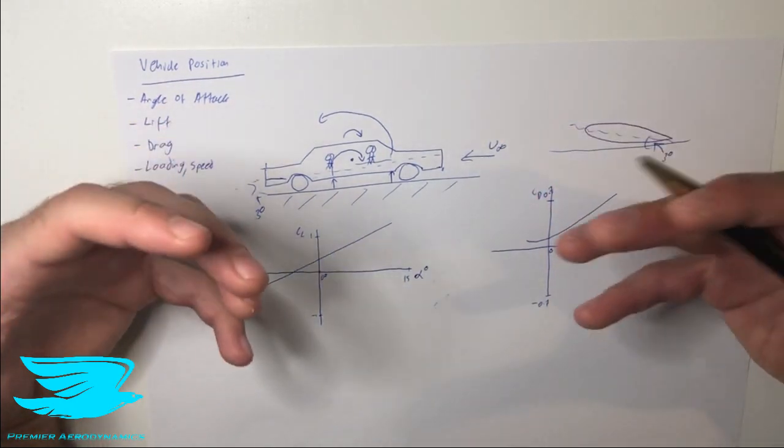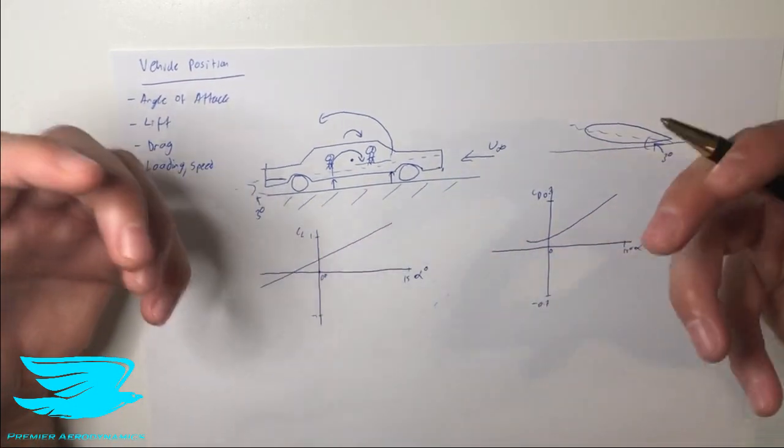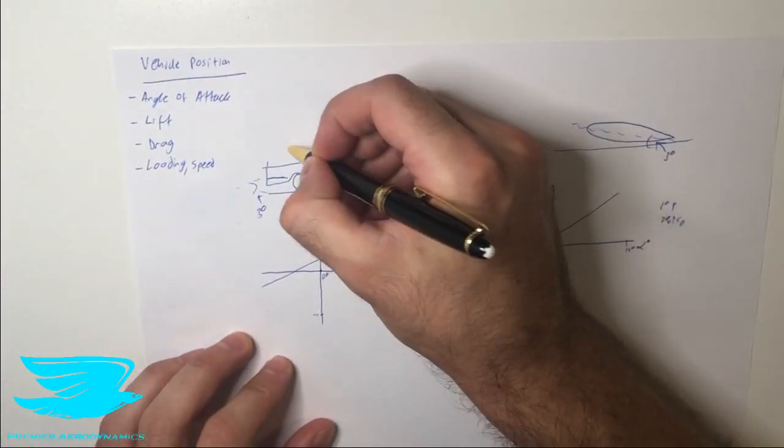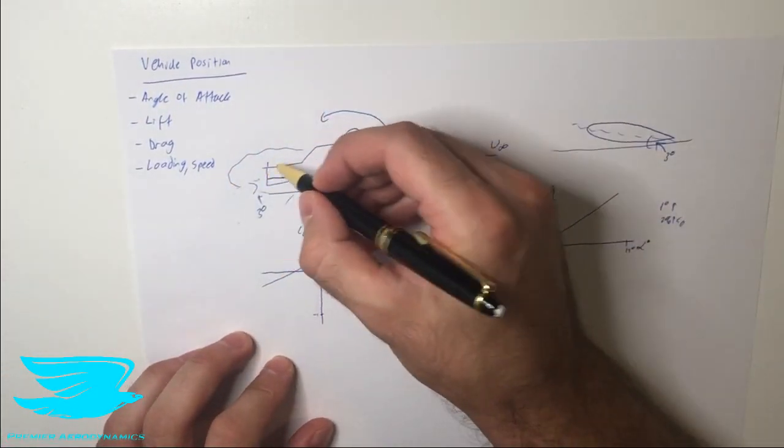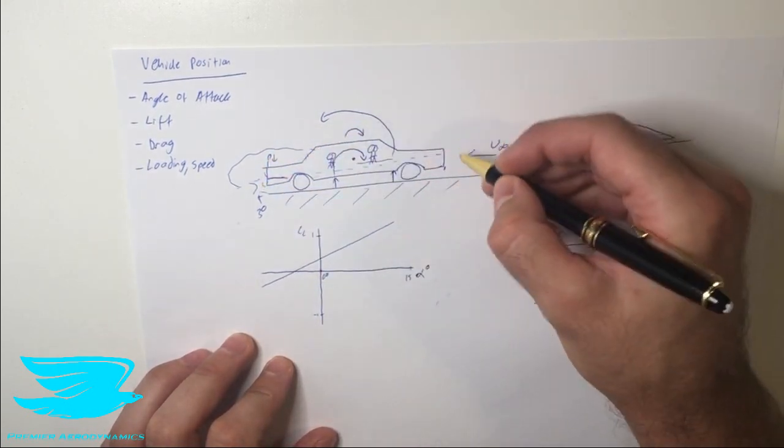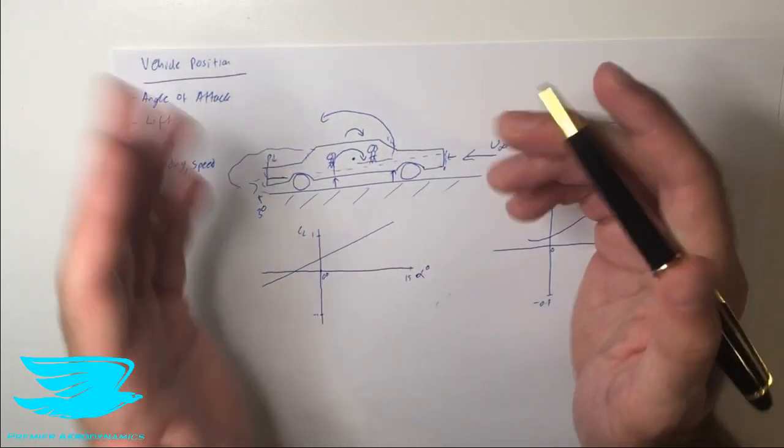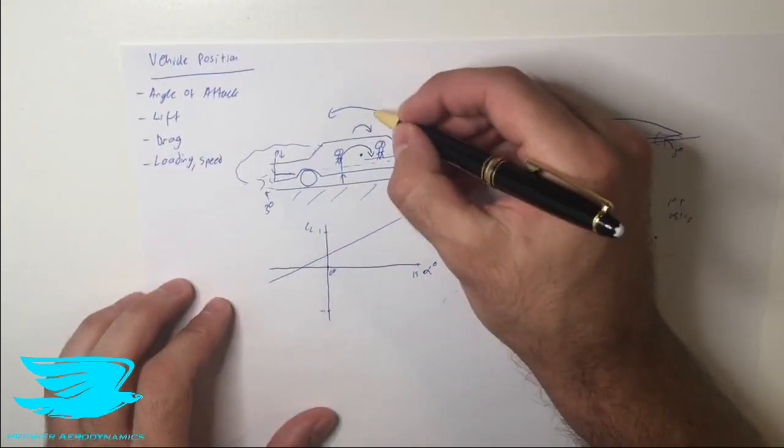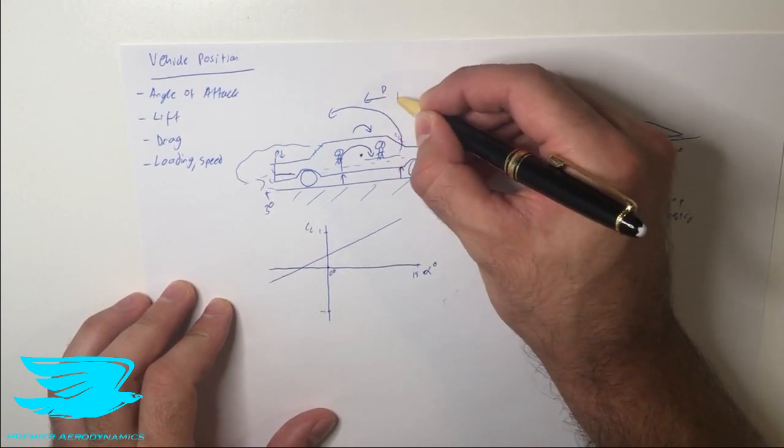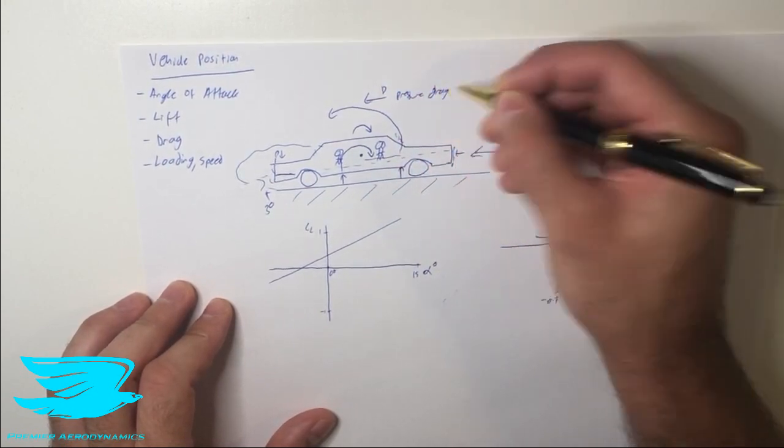Because this car is bluff, we typically have most of the drag being produced is the pressure drag. So that means that we get a very big wake back here, and we have low pressure subsequently on these faces, and we have high pressure on these faces. So we have a net change in pressure from front to back, and that results in a drag force backwards, which is due to the pressure drag. And we've gone through this in other videos.